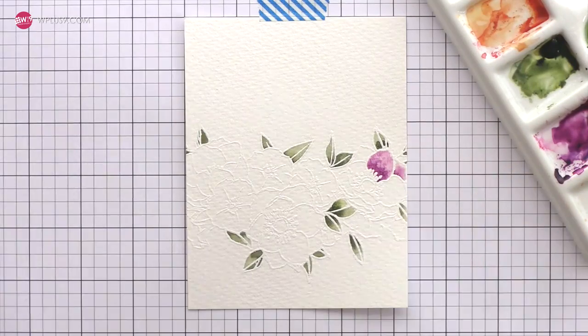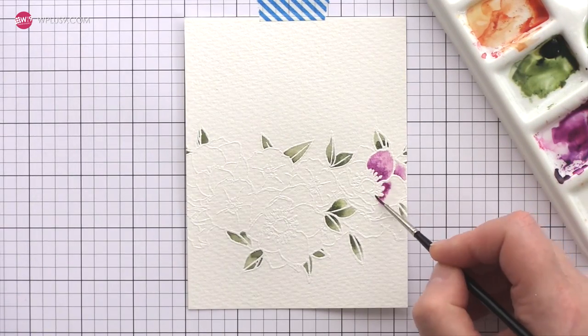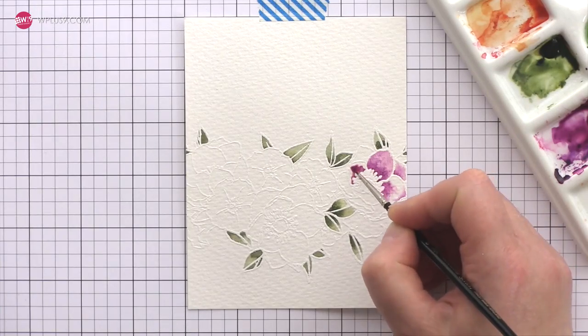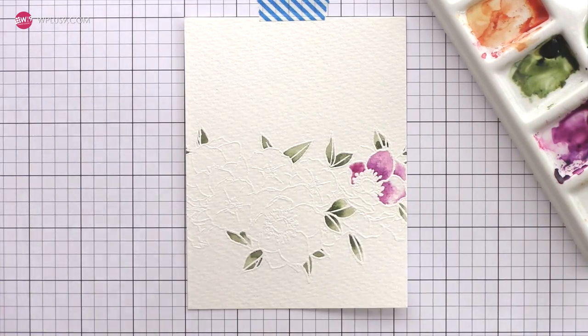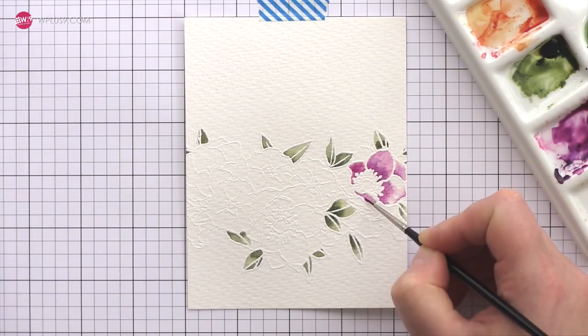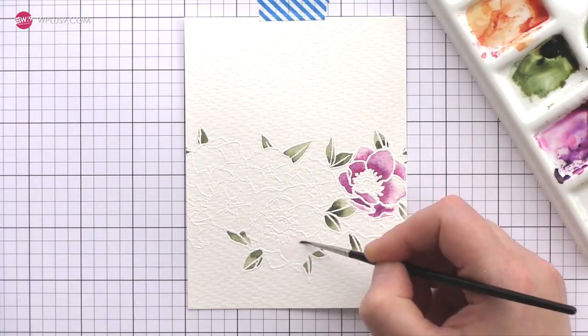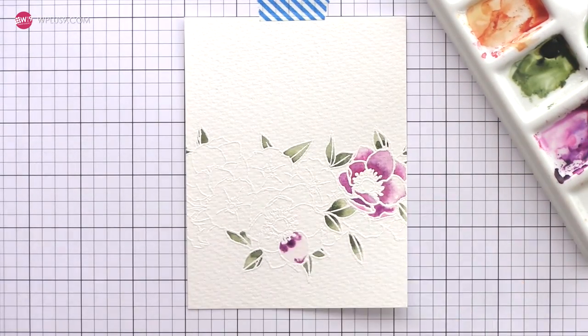Secondly I use the wet on wet technique by applying a wash of water over the area to be painted and then dropping in the paint into the shadow areas and letting the water do the work in slowly spreading the paint through the water. Both techniques create lovely results with areas of deeper color in the shadows and lighter color where light might be hitting the leaves and petals.